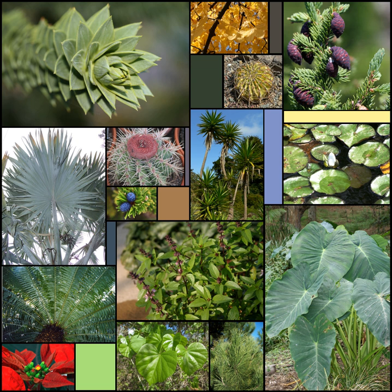A leaf is a dorsoventrally flattened organ, usually borne above ground and specialized for photosynthesis. In most leaves, the primary photosynthetic tissue, the palisade mesophyll, is located on the upper side of the blade or lamina of the leaf, but in some species, including the mature foliage of eucalyptus, palisade mesophyll is present on both sides and the leaves are said to be isobilateral.